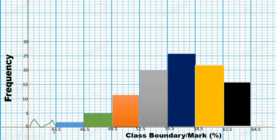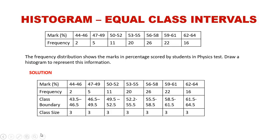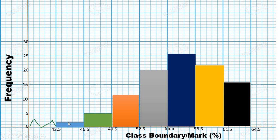Because the class sizes are equal — each is 3 — the widths of all bars are the same. From one boundary to the next the difference is always 3. The only difference between the bars is their height, which corresponds to the frequency.